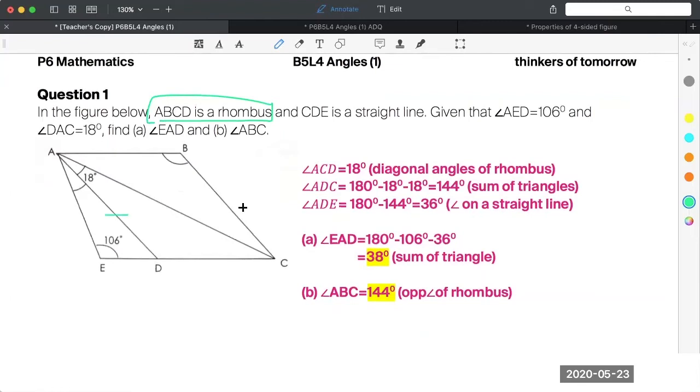So ABCD - that's a rhombus. So all sides are equal, right?